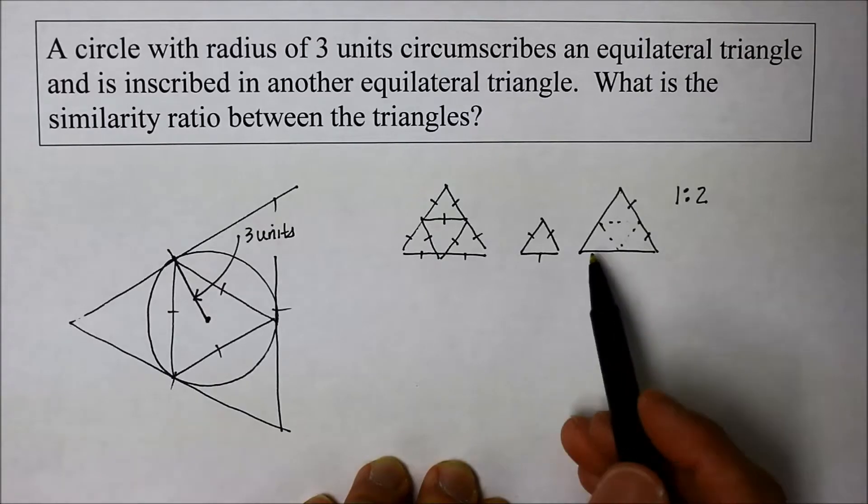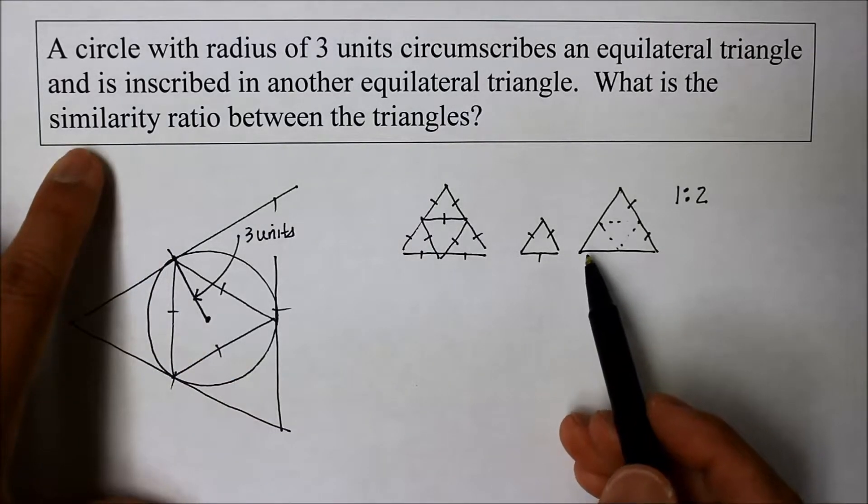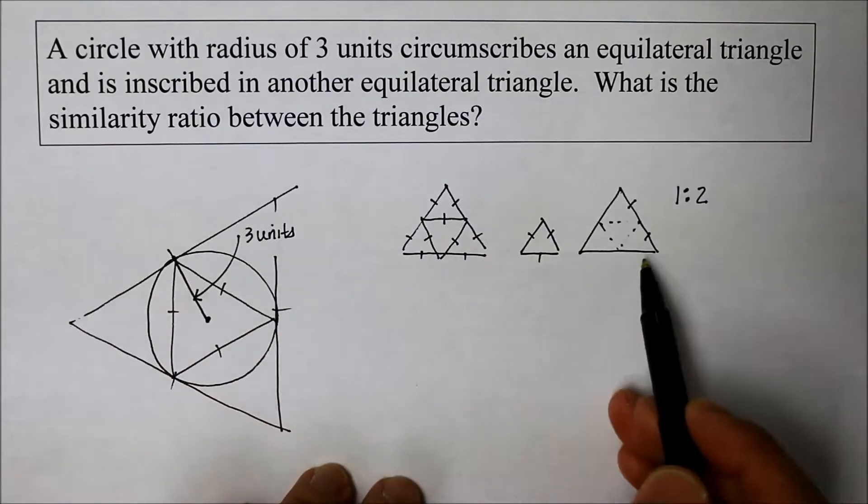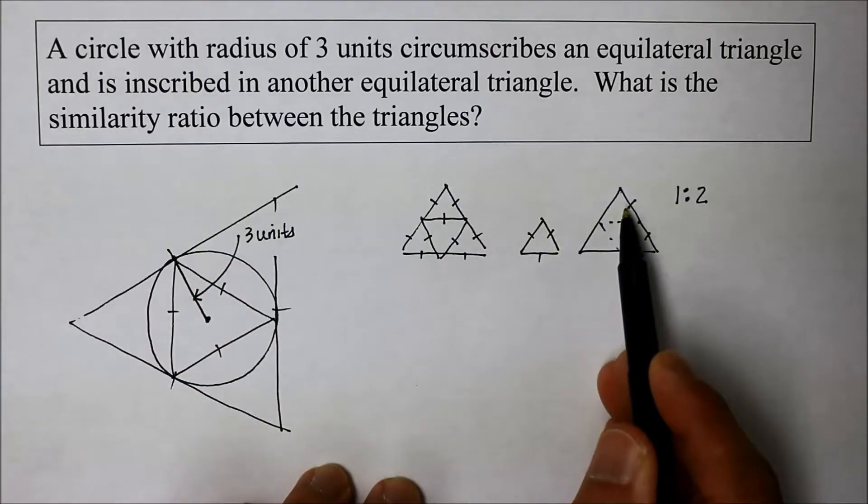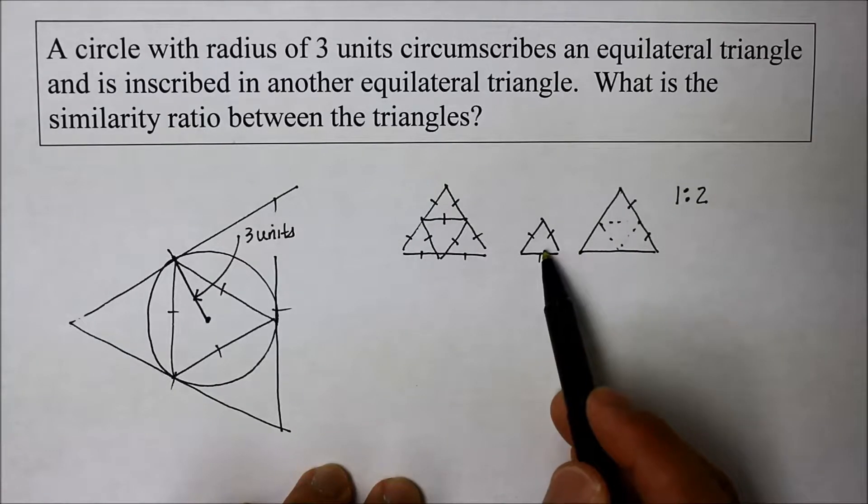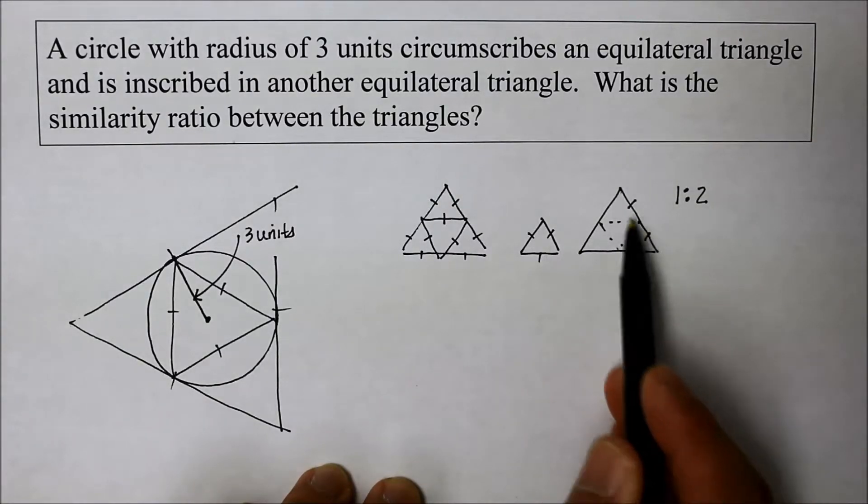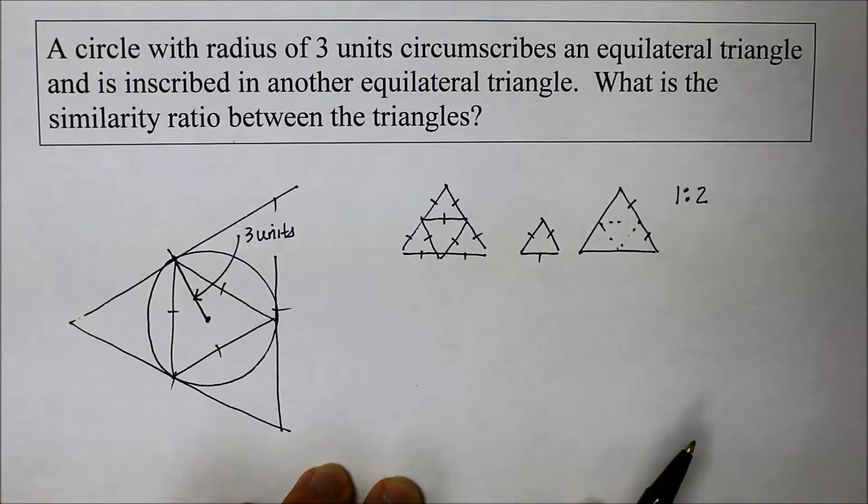And that is a similarity. Why is it quite similar? It's not congruent. One is definitely bigger than the other, but they have the same shape and same angles. And the ratio, the factor between the small one and the big one is a factor of two. It's twice the length of the sides. So that's one way to look at it.